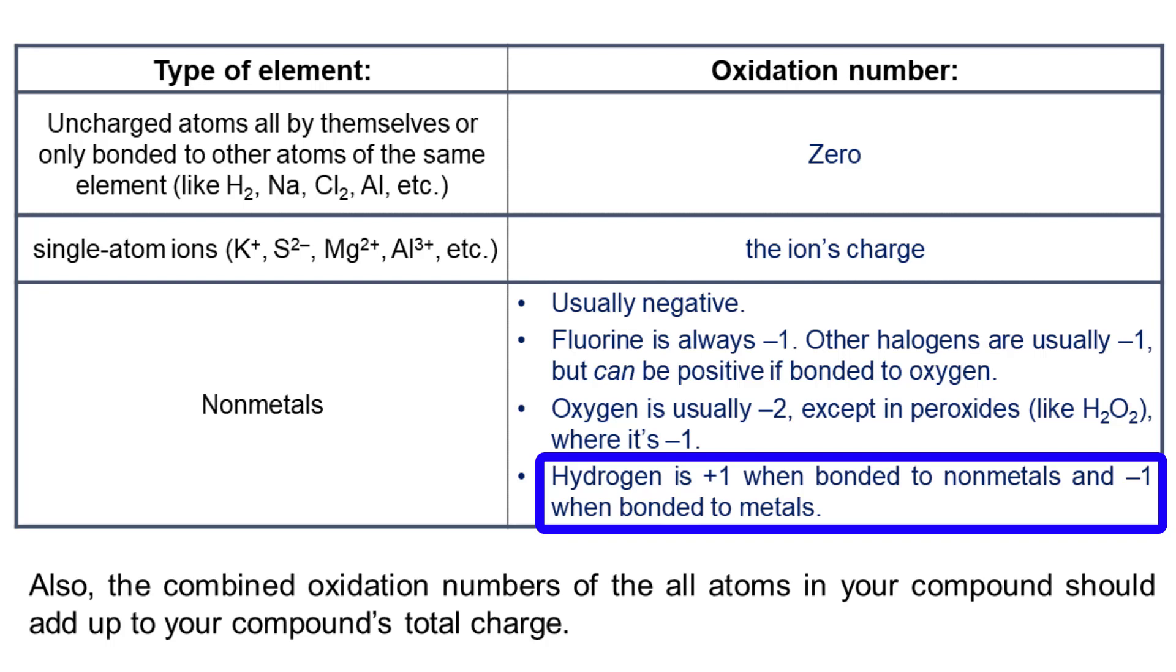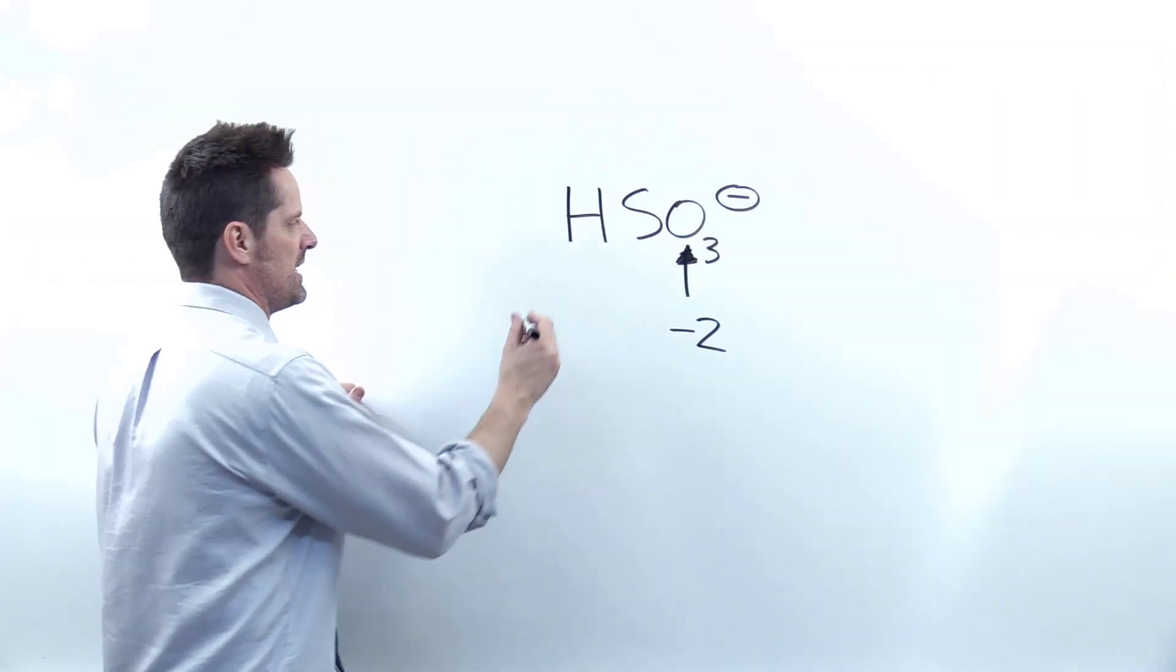Now to freshman general chemistry level, it's very rare to see hydrogen be bonded to metals. So most of the time it's going to be positive one. And that turns out to be the case here.